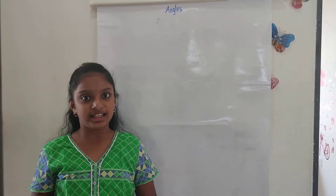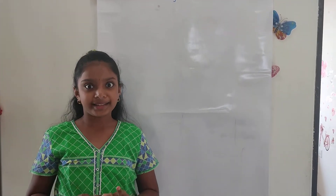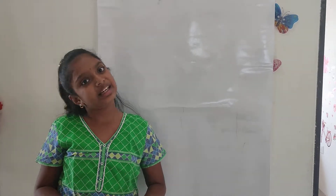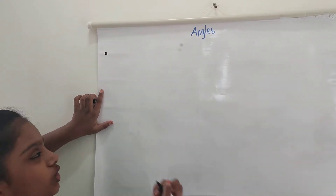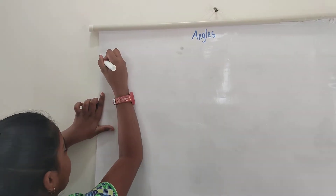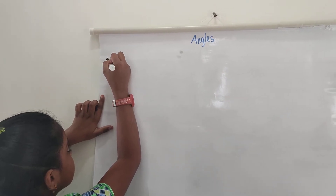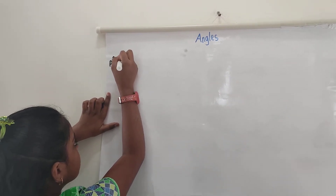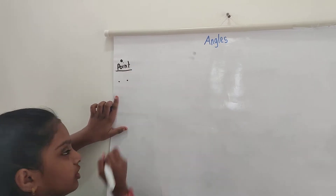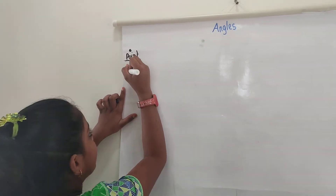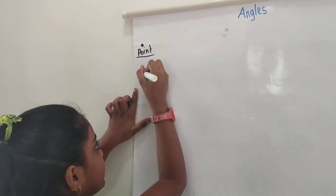First, let us see about the point, line, line segment, and the ray. A point is a dot — it is known as a point. Next, here there are two dots connected by a line. It is a line.